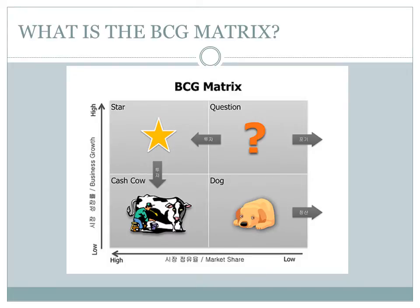What is the BCG Matrix? The BCG Matrix, also called the BCG Model, relates to marketing. It is a well-known portfolio management tool used in product life cycle theory. It's a four-cell matrix and the most famous corporate portfolio analysis tool. It provides a graphic representation for an organization to examine different businesses in its portfolio on the basis of their related market share and industry growth rates. It is a two-dimensional analysis on management of SBUs — Strategic Business Units — in other words, a comparative analysis of business potential and the evaluation of the environment.